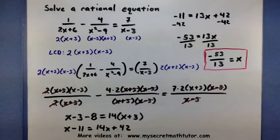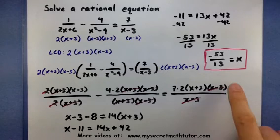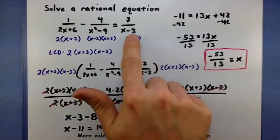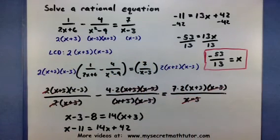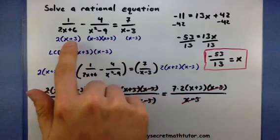Now keep in mind, when working with rational equations, we have to be careful with these solutions we find. As long as they do not make the denominator 0, we can keep them. If they do make the denominator 0, then we have to throw those out. Well, fortunately, negative 53 divided by 13 does not make any of the denominator 0.